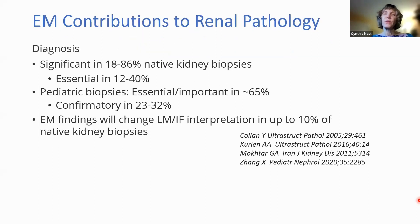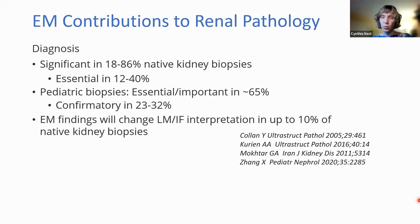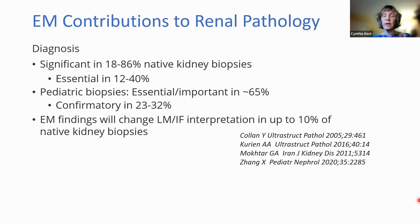EM can provide a number of contributions to renal pathology. Diagnostically, studies from different parts of the world have shown it provides significant information in up to 86% of native kidney biopsies, and is essential in up to 40% of pediatric biopsies — being essential or very important for appropriate diagnosis in 65% and confirmatory in 32%. So in greater than 95% of pediatric kidney biopsies, EM provides very useful or necessary information. It's also been shown that EM findings may change the interpretation of light and/or immunofluorescence in up to 10% of native kidney biopsies.